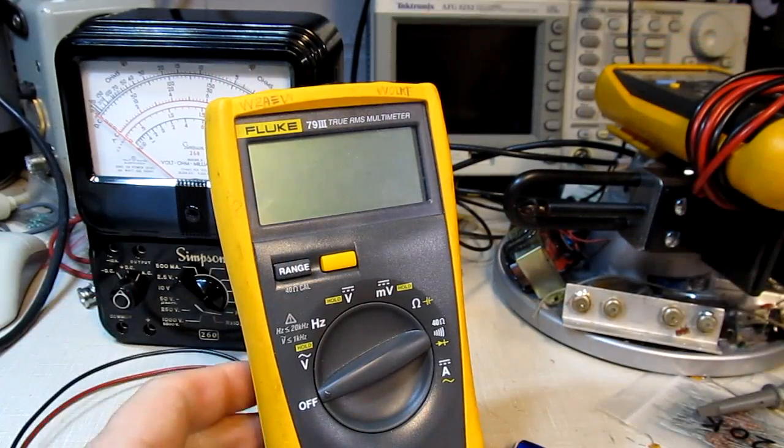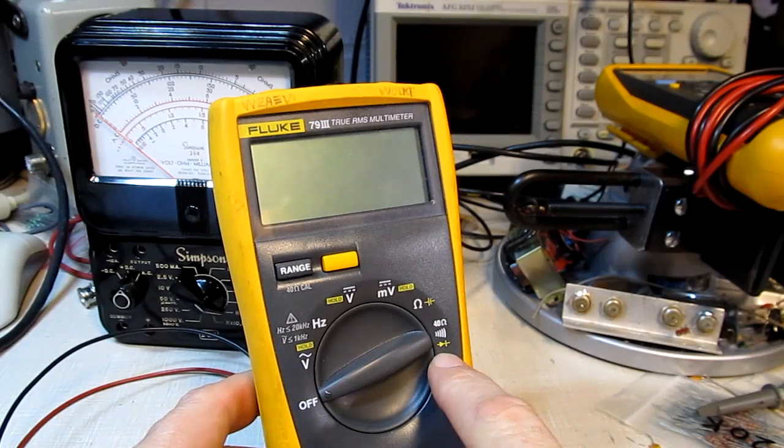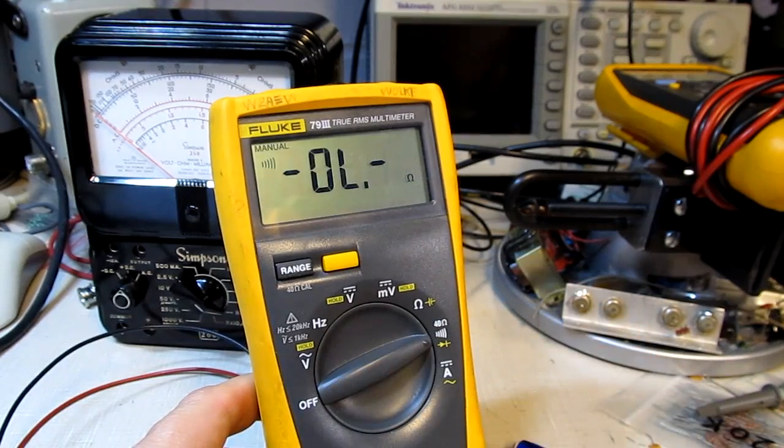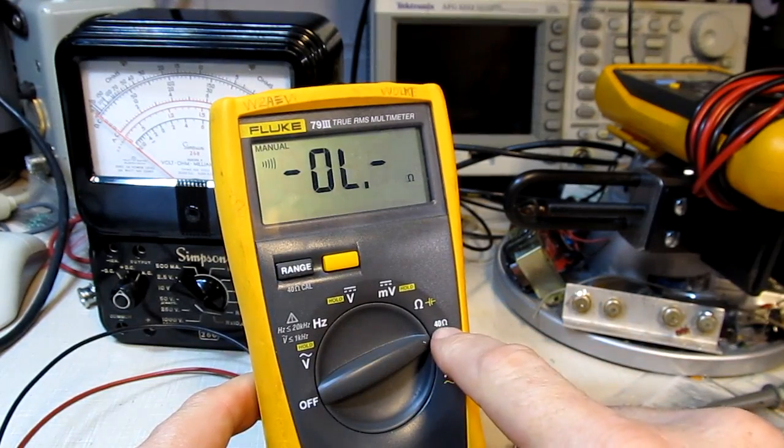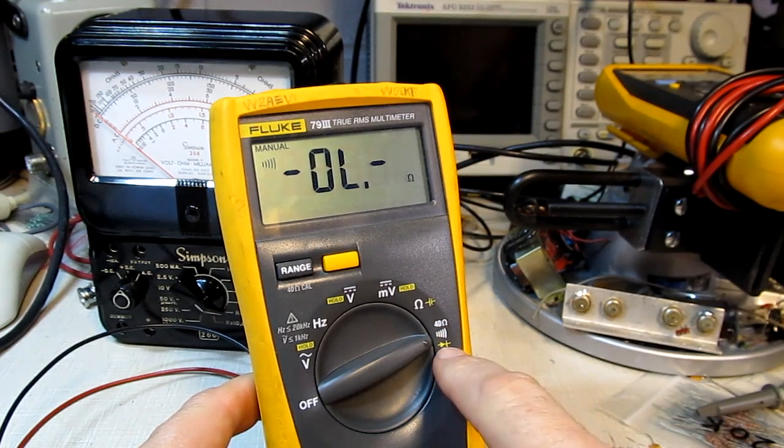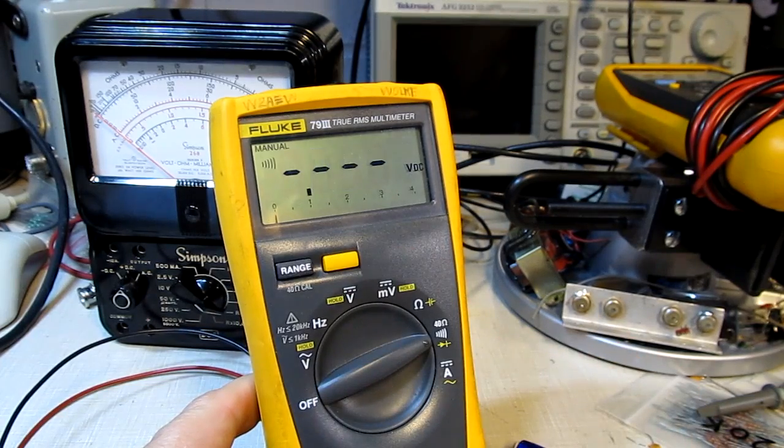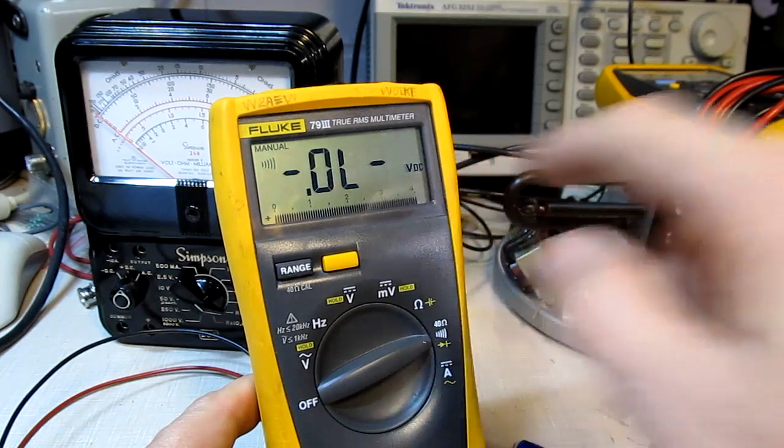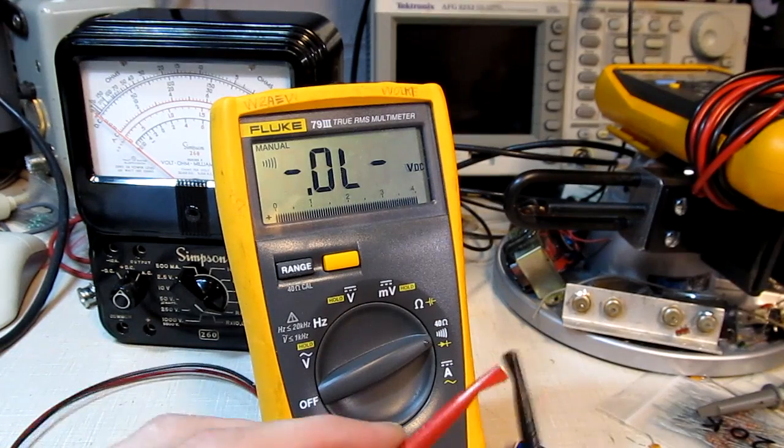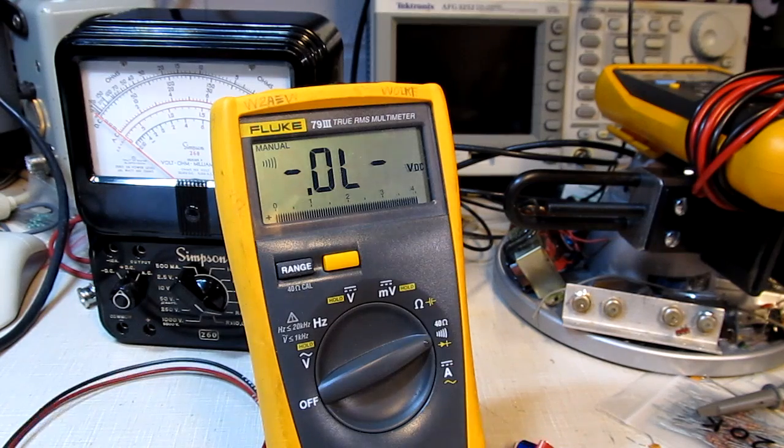So I've got this older Fluke 79 and with this one we see the diode symbol down here but it's in yellow and what that means is that when we switch to that mode we're basically in the low ohms or 40 ohm or continuity test mode but if I hit the yellow button that will put me in the diode test mode and we see we actually get a volts reading here. So what that'll do is put a test current through the junction and we can actually read the forward voltage.